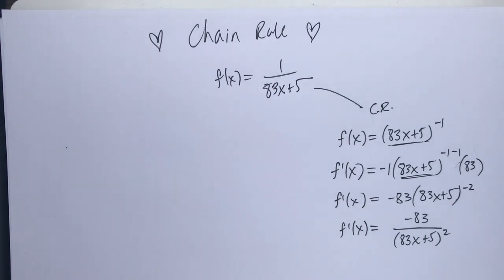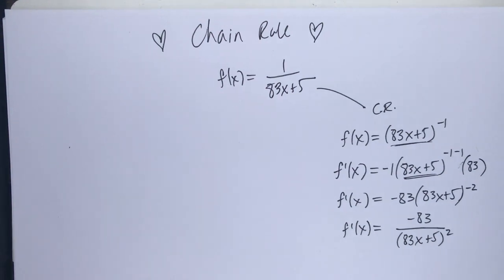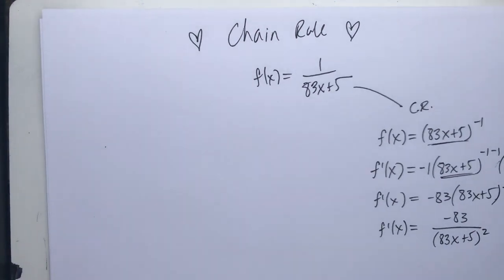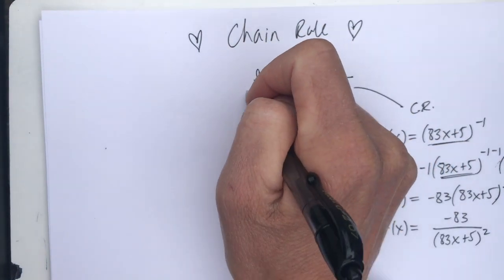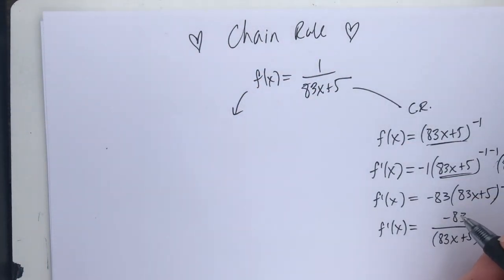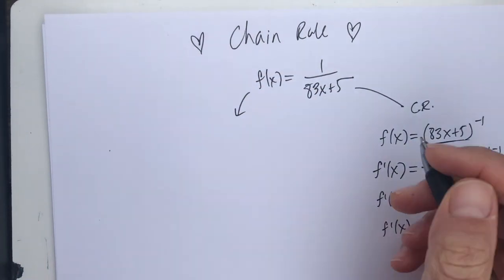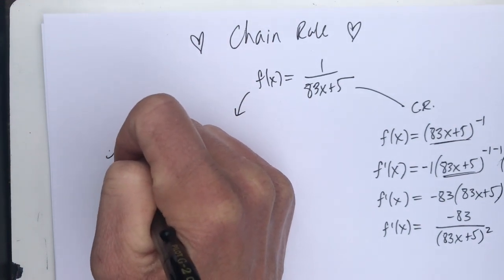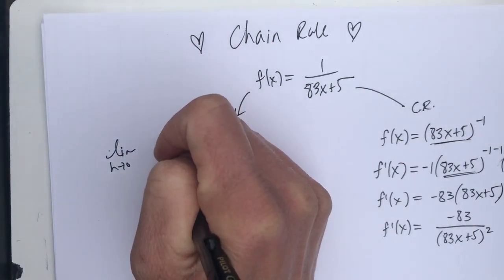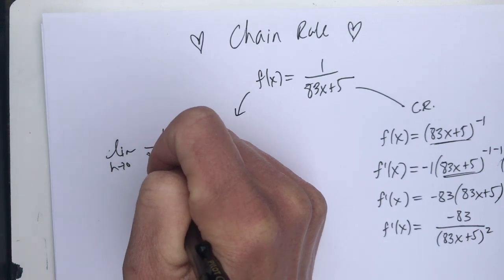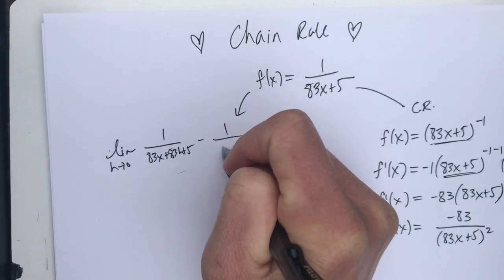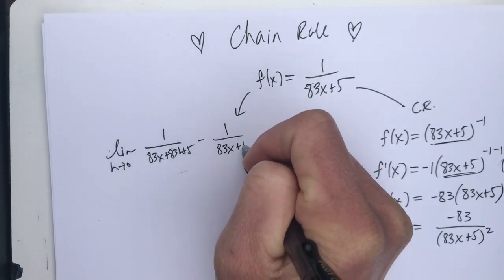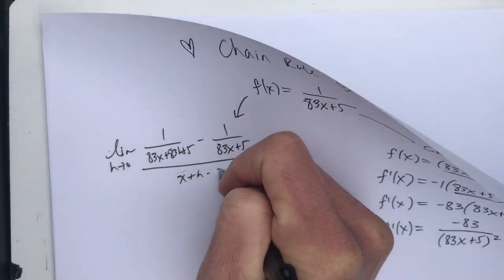Now, if you're not totally buying this, I am going to do a proof of how to take this derivative using our difference quotient. It's going to be kind of quick and dirty, and we have to do a lot of algebra tricks, so bear with me here. So I'm going to take the limit as h goes to 0 of 1 over 83x plus 83h plus 5 minus f of x, 83x plus 5, all over x plus h minus x.